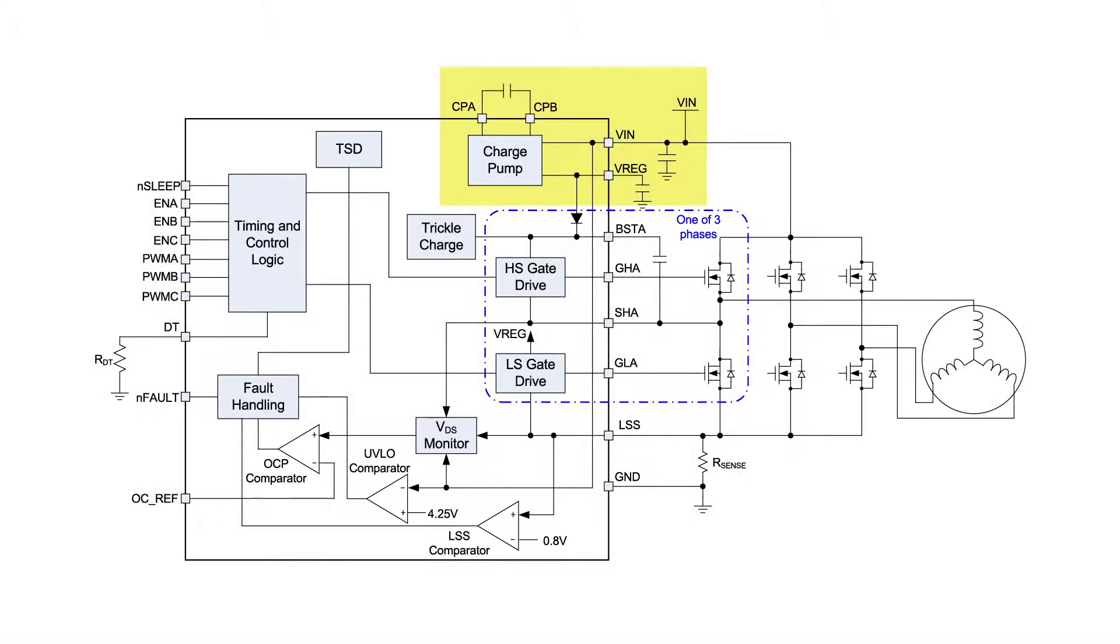The MP6530 operates over a very wide supply voltage range. It can work from power supplies as low as five volts and as high as 60 volts. Over that entire supply voltage range, the gate drive voltage remains at about 10 volts.